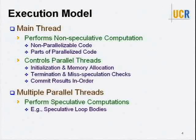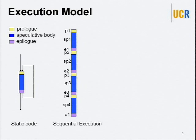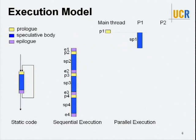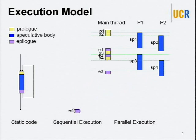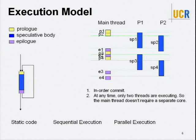Visually, if you have a loop, we divide the loop into three parts: the prologue, the epilogue, and the speculative body — this is what's going to run in parallel, while the prologue and epilogue run sequentially. The main thread executes the prologue and assigns work to the threads. When one of them finishes, it returns the results to the main thread, which commits the results and assigns more work. The epilogue and prologue are executed in exactly the same order as they were originally in the program; it's only the speculative body which is executed in parallel.